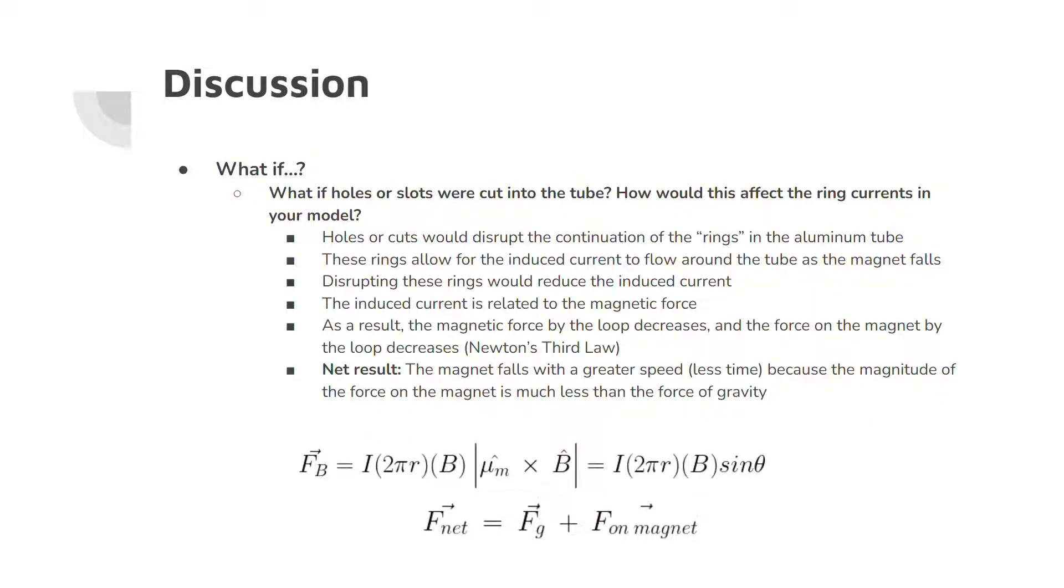If there were holes or slots in the tube, there would be a disruption of complete rings in the tube, which decreases the induced current in a loop. This decreased current reduces the magnetic force on the loop or ring and the force on the magnet by a loop in the tube. As a result, the net force would increase in magnitude and be in the same direction as the force of gravity. The result of this is a higher speed of the magnet as it drops through the tube, which means less time for the magnet to cover the tube.